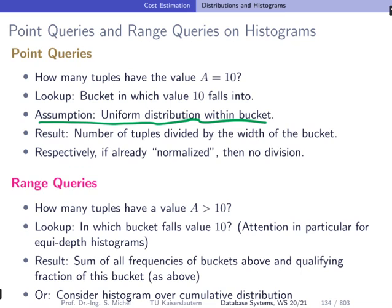For equi-depth histograms, querying is slightly more complicated because a value can fall in multiple buckets if that value appears very frequently. You have to consider all such buckets and sum them up, taking into account the ratio of frequency occurrences within buckets that are shared with other values.